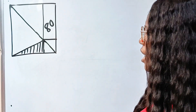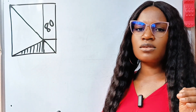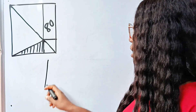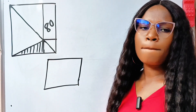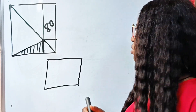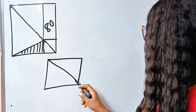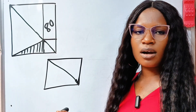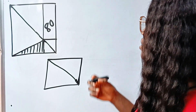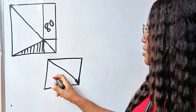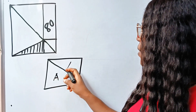Let us remember that the two triangles formed by the diagonal of a rectangle are congruent. Two triangles formed by the diagonal of a rectangle are congruent. What this means is: if the area of one triangle is A, the area of the other triangle is also A.